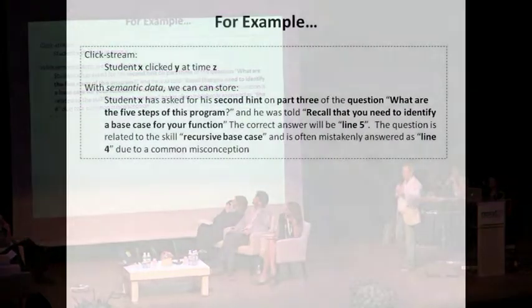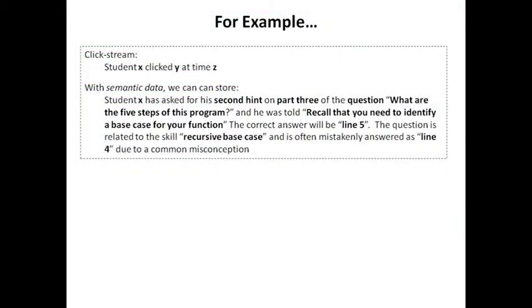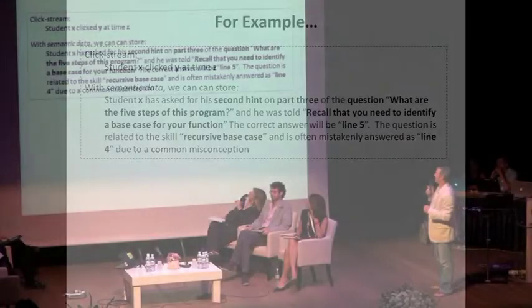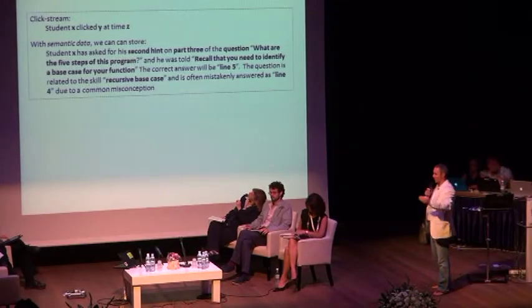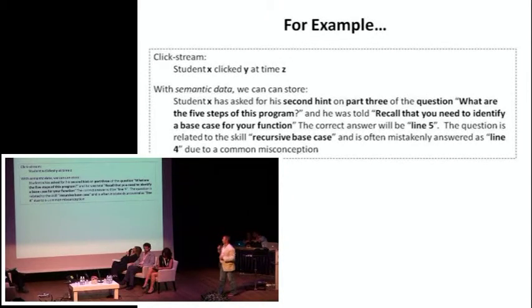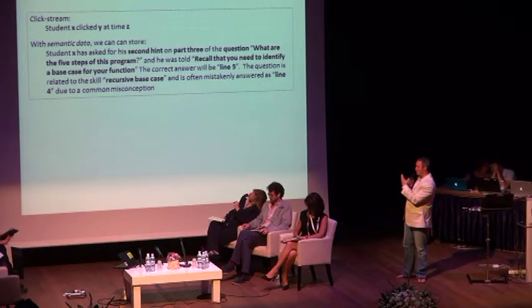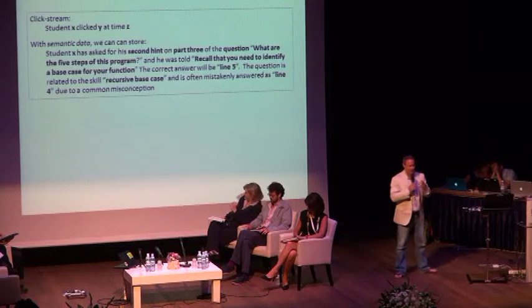Whereas with semantic data, as the student's working through an activity or a problem or a multi-step problem online, we can say student X has asked for his second hint on part three of the question, what are the five steps of this program, and the system told that student back, recall that you need to identify a base case for your function. The correct answer will be line five. The question is related to the specific skill in the model called the recursive base case, and it's often mistakenly answered as line four due to a common misconception. That's a lot of information about the content that we know.